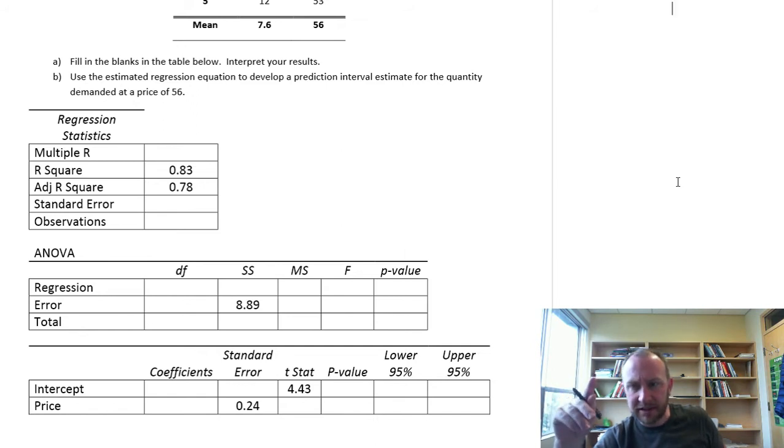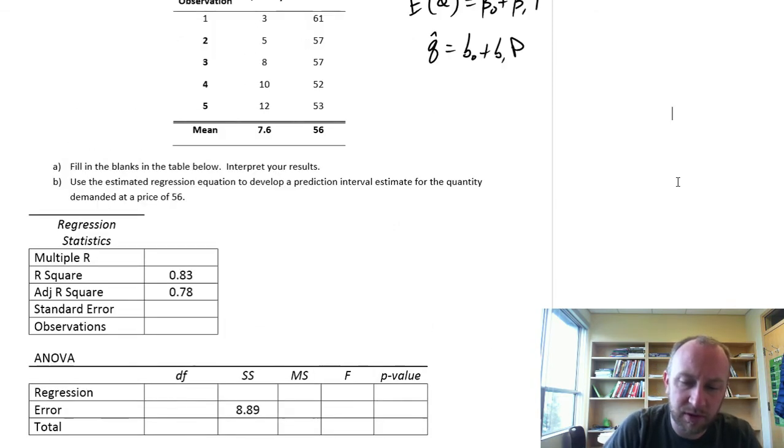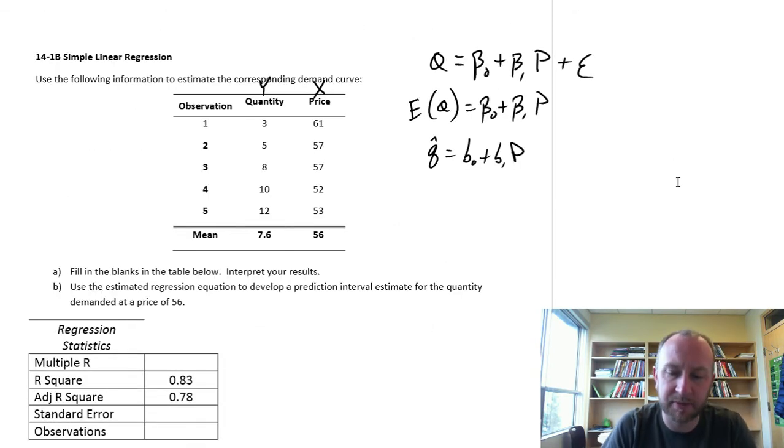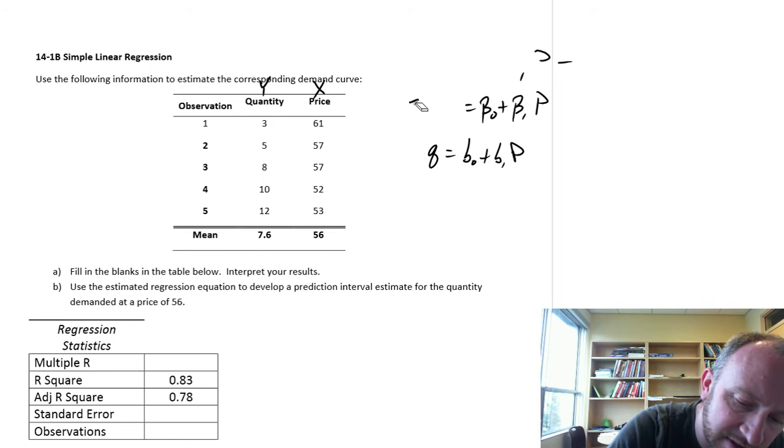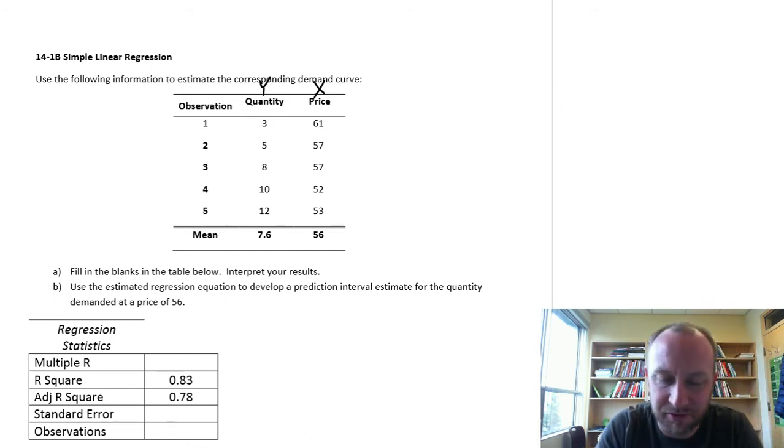The first thing we'll do, given the information in this table, is calculate our coefficients. The first part is to calculate the slope coefficient, because the intercept coefficient is a function of this slope. I'm going to scroll back up here and clear myself this space.